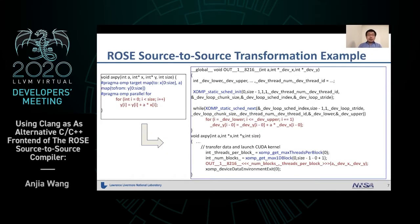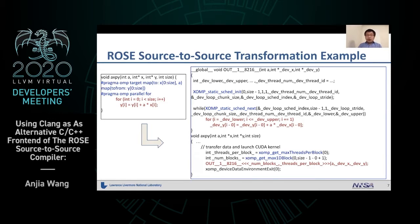This is an example for source-to-source transformation. On the left, we have this xpy function. It uses an OMP target directive to offload a loop to GPU. On the right side, we have the transformed code. First, we create an outlining function — the CUDA kernel. Inside the CUDA kernel, we have the actual loop with lower and upper bound, chunk size, and so on.